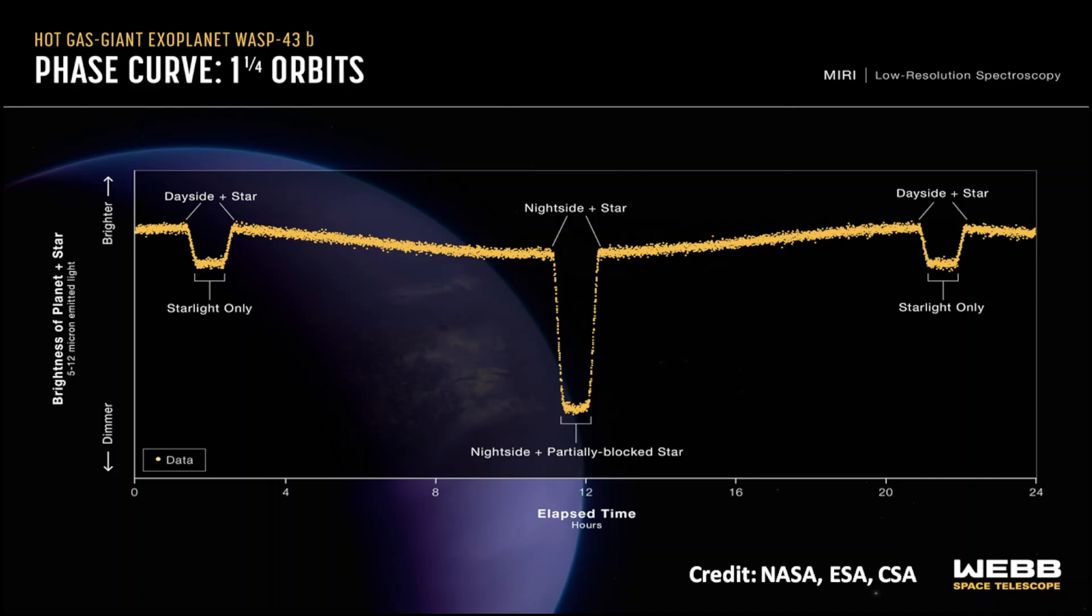The day side has a temperature of 1500 K. There are no clouds in the atmosphere above the photosphere. The night side has a temperature of 860 K.